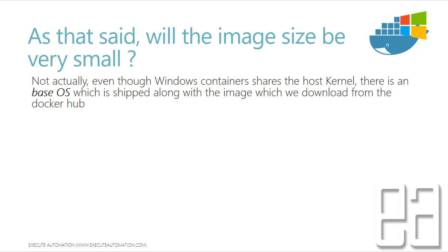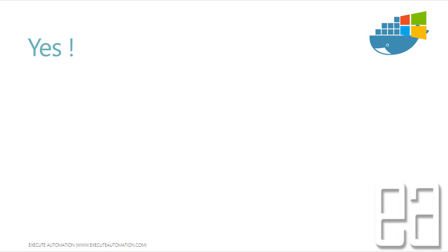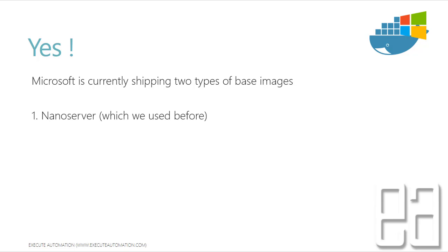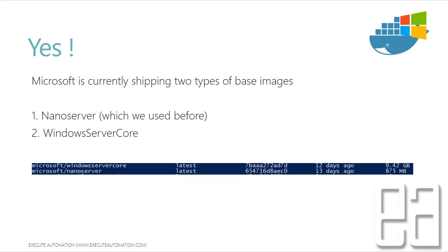So will the image size be very small, since the kernel is going to be the same as the Windows Server kernel? Not actually — even though the Windows Server container shares the host kernel, there is a base OS shipped along with the image that we download from Docker Hub. Microsoft is currently shipping two types of base images: one is the nano server image, which we used in our Hyper-V container demonstration in previous videos, and the other is Windows Server Core.